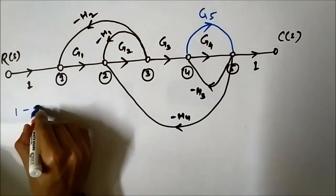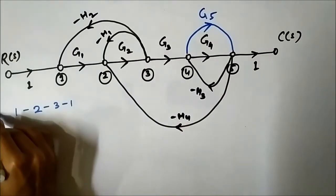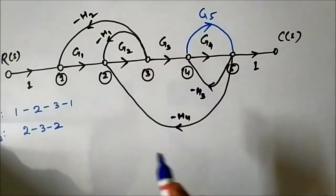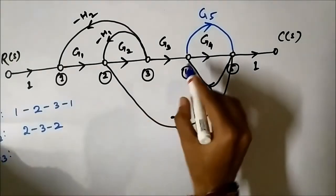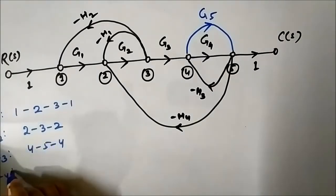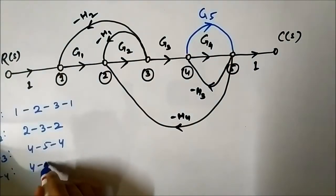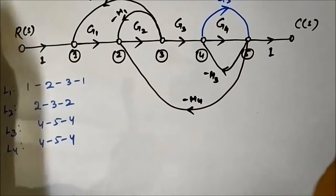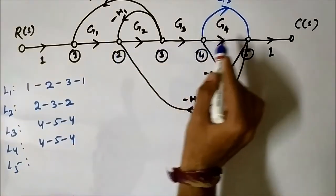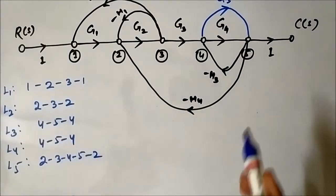The first loop L1 is represented as nodes 1, 2, 3, 1. L2 is 2, 3, 2. L3 is 4, 5, 4. L4 has the same nodal notation 4, 5, 4 but a different path. The final loop L5 is 2, 3, 4, 5, 2. So we have these 5 loops — no more loops exist. We just represent the nodal representation of each loop without writing the gains.